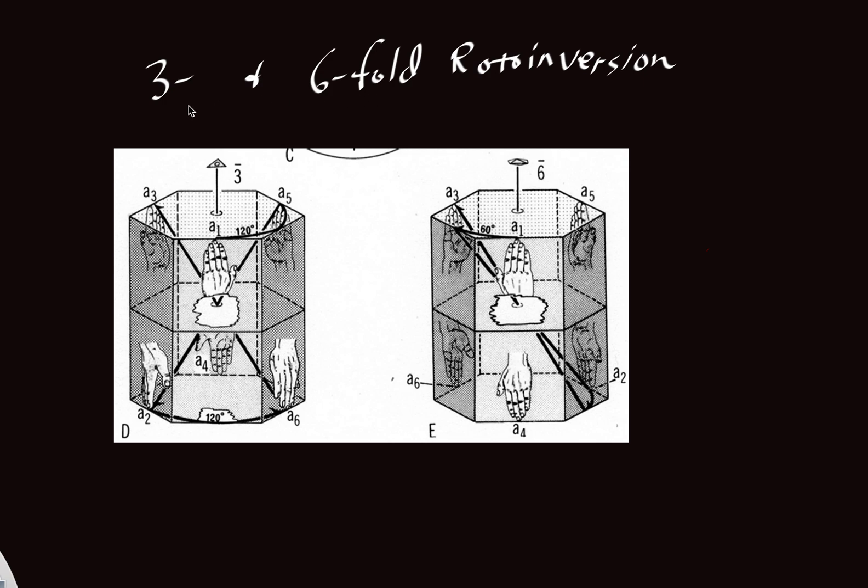So here we're going to introduce the 3 and 6-fold roto inversion operations. The 3-fold roto inversion would be symbolized as a bar 3, and this fellow would be symbolized as a bar 6. These are a variation on the theme of 3-fold rotation and 6-fold.